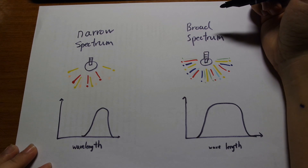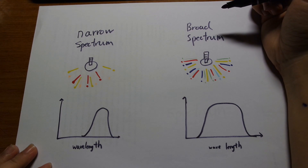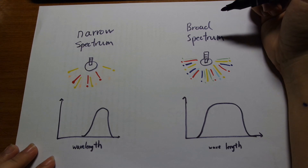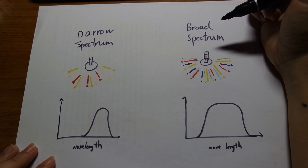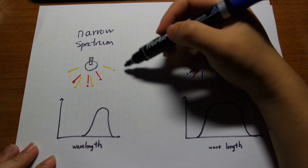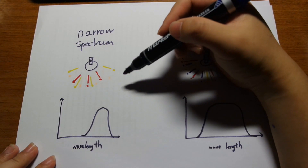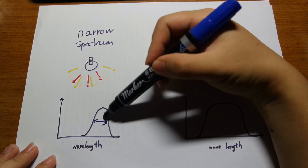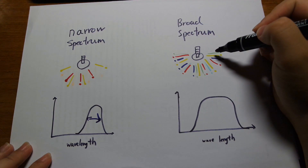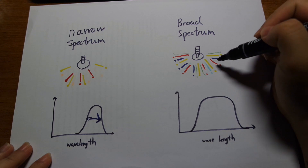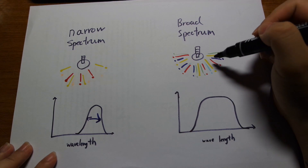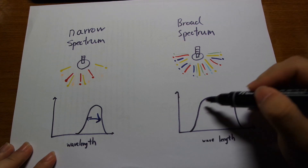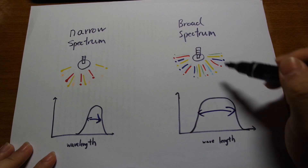A common term used is whether a light bulb is narrow spectrum or broad spectrum. A narrow spectrum is not going to produce a wide range of wavelengths — it's only going to produce a certain wavelength and it's going to be narrow. Whereas a broad spectrum light produces green, blue, and red — a lot of light — so it will have a broader spectrum.